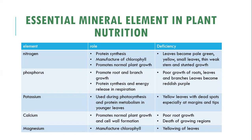Moving on, we'll discuss the essential minerals for plant growth and development — their roles and deficiencies. Starting with the first one: nitrogen. The roles of nitrogen in plant nutrition are that it enables protein synthesis, it enables the manufacture of chlorophyll which is important for photosynthesis, and it promotes normal plant growth.